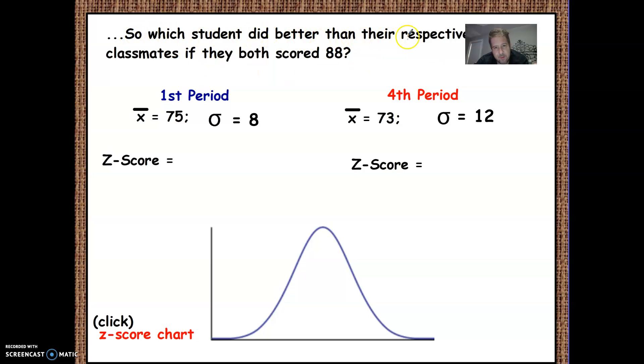So what student did better than their prospective classmates? So we can figure it out now. So 88 was their score, minus 75 divided by 8. Do the same thing over here. 88 minus 73 divided by 12 to find out who has the greater Z score. So 88 minus 75 gives me 13. Divide that by 8. You get 1.625.